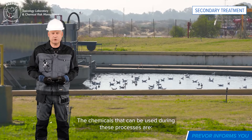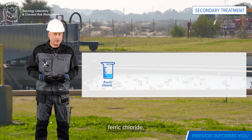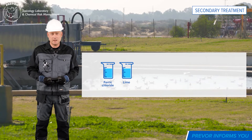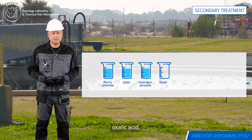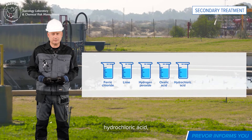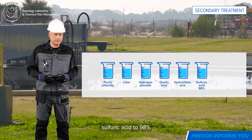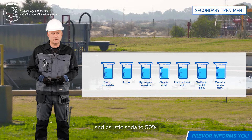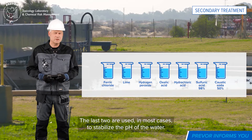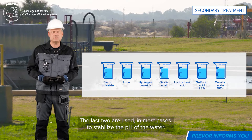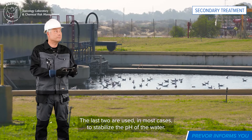The chemicals that can be used during these processes are ferric chloride, lime, hydrogen peroxide, oxalic acid, hydrochloric acid, sulfuric acid at 98%, and caustic soda at 50%. The last two are used, in most cases, to stabilize the pH of the water.